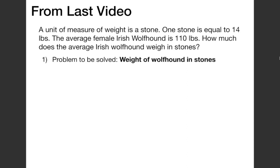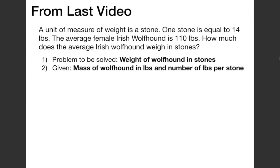What's the problem to be solved? We're looking to determine the weight of an Irish wolfhound in terms of stones. The information that we're given is the mass of the wolfhound in pounds — 110 pounds — and the number of pounds per stone, which is 14 pounds per stone.